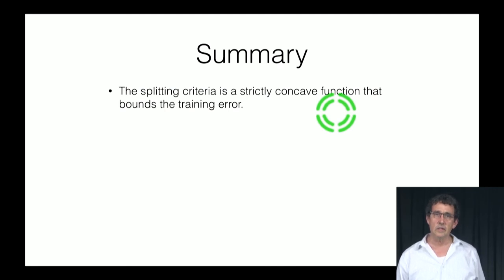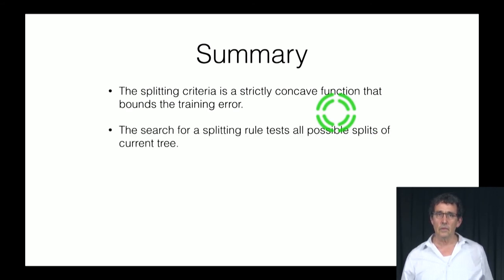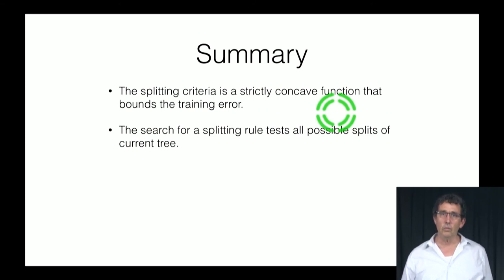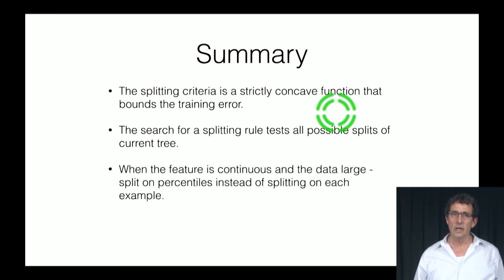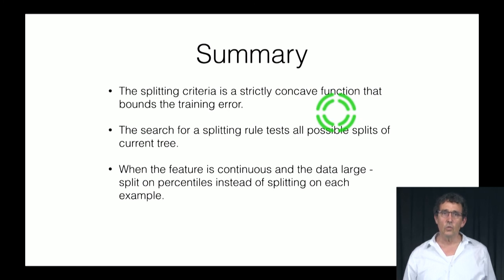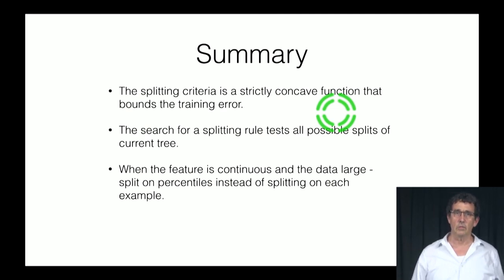To summarize: the splitting criteria is a strictly concave function that bounds the training error. The search for a splitting rule tests all possible splits in the current tree. And when the feature is continuous and the data is large, we split on percentiles obtained using sampling, instead of sorting all examples.